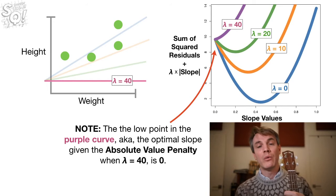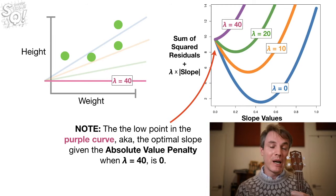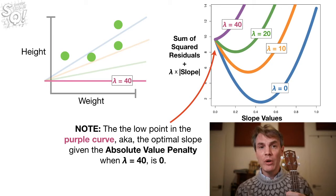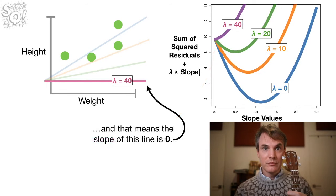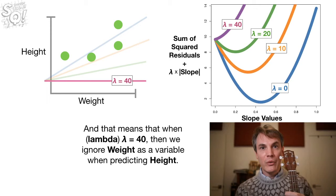Note, this is super important, and it's one of the big differences between ridge and lasso, or squaring the parameters versus taking the absolute value. Okay, the low point in the purple curve, a.k.a. the optimal slope given the absolute value penalty, when lambda equals forty, is zero. And that means the slope of this line is zero. And that means that when lambda equals forty, then we ignore weight as a variable when predicting height.